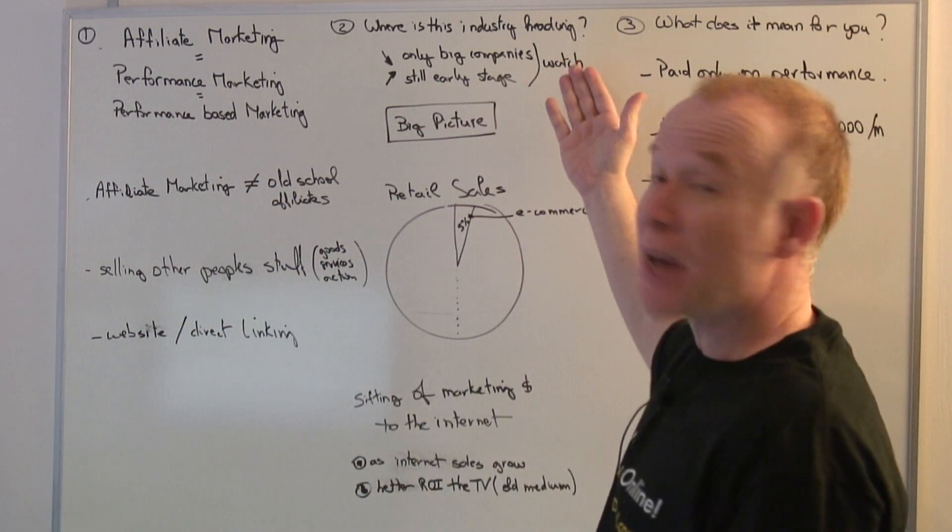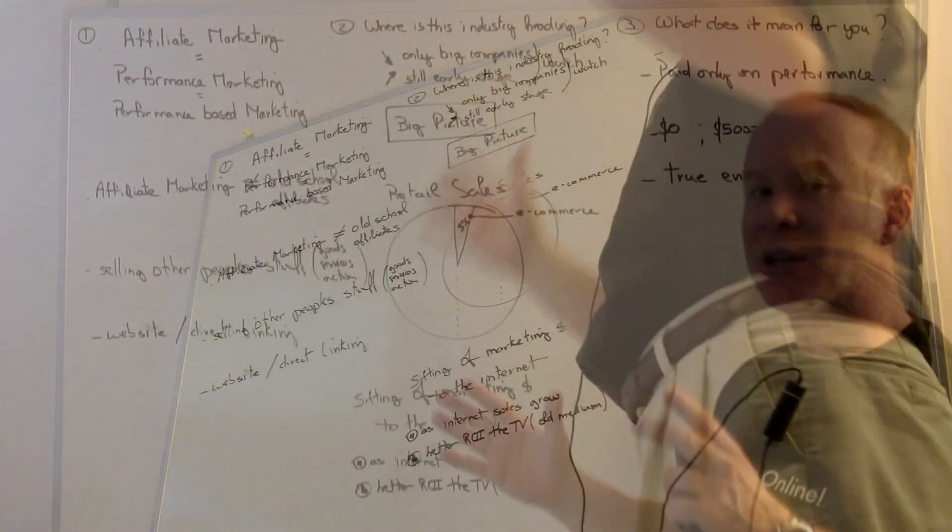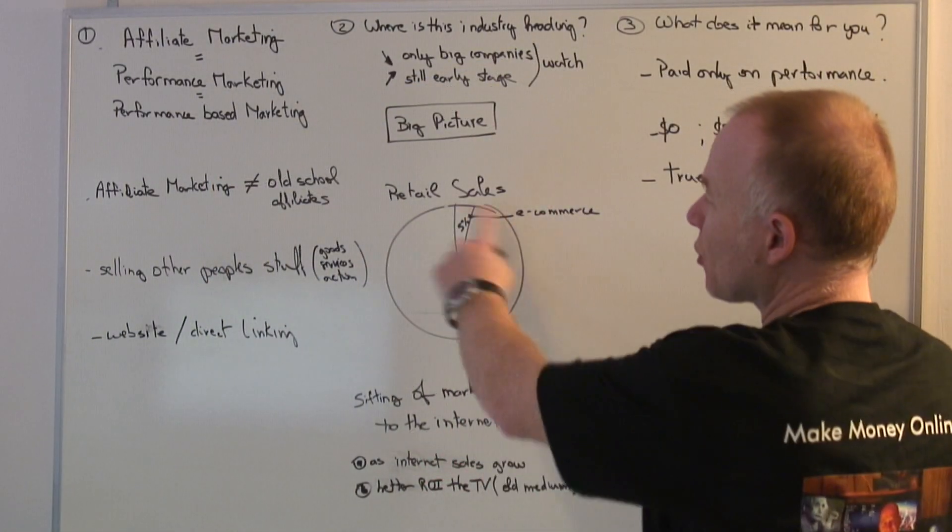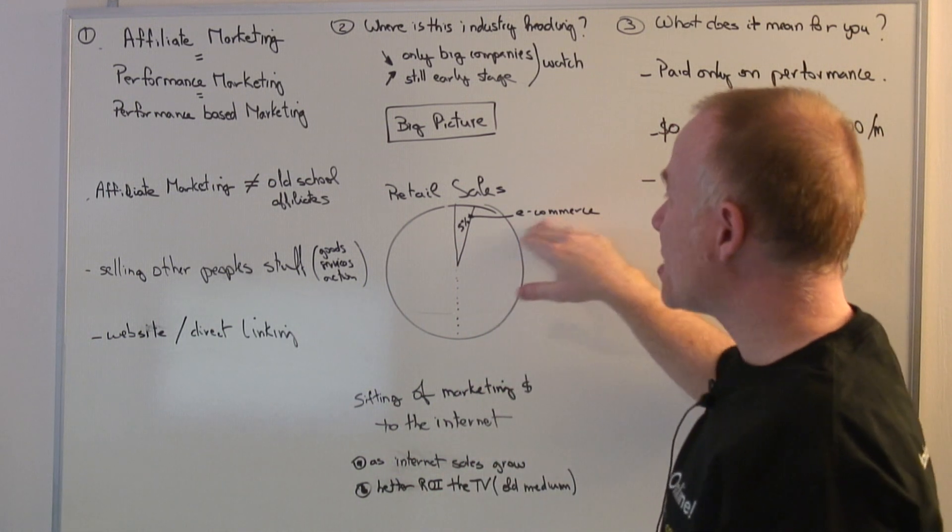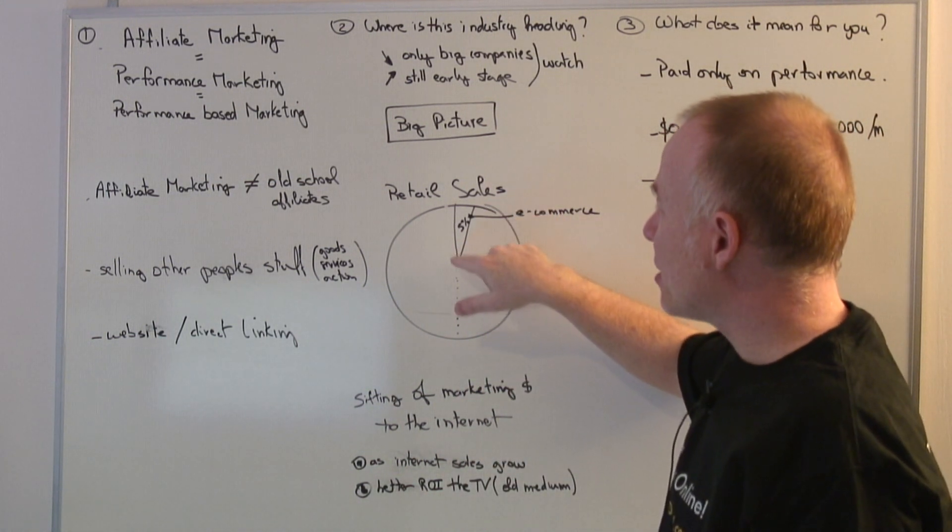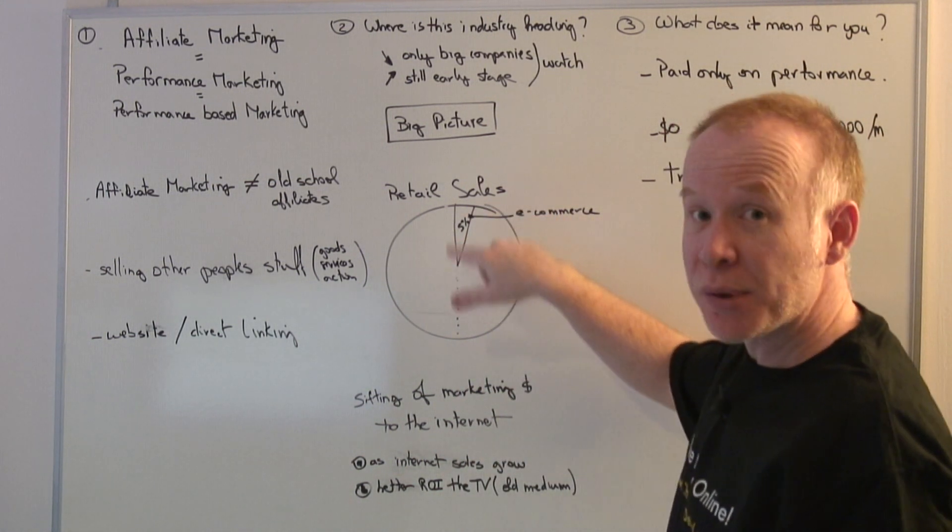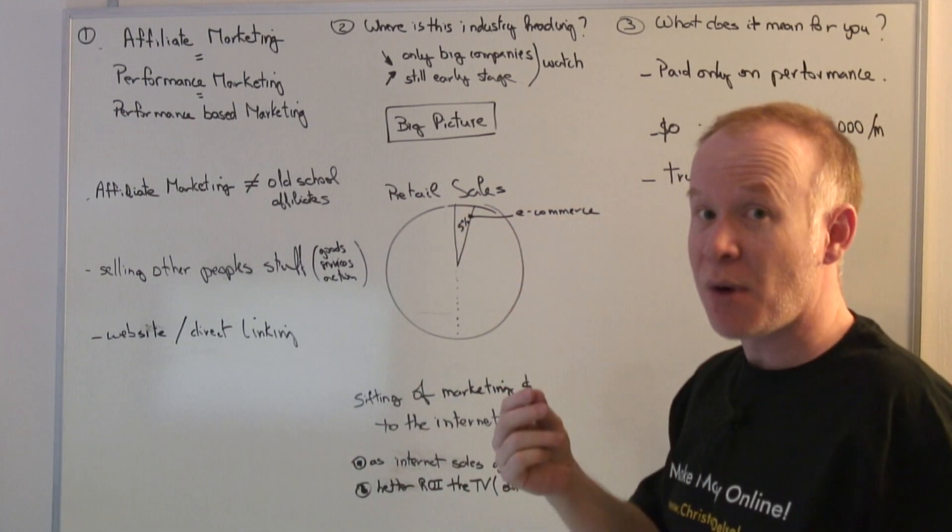Question number two, where is this industry heading? I'll try to give you a big picture overview. This circle here represents retail sales. And e-commerce, internet sales are represented here, are about 5%. As you can see, it's a very small piece of the pie.